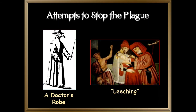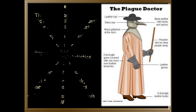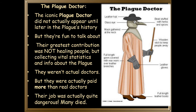Attempts to stop the plague included a doctor's robe and the process of leeching. Bloodletting was thought to rid the blood of poisons and bring the fluids into balance. The iconic plague doctor did not actually appear until later in the plague's history. Their greatest contribution was not healing people but collecting vital statistics and information about the plague. Plague doctors weren't actual doctors, but they were paid more than real doctors, their job was quite dangerous, and many died.